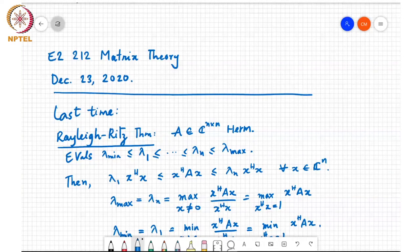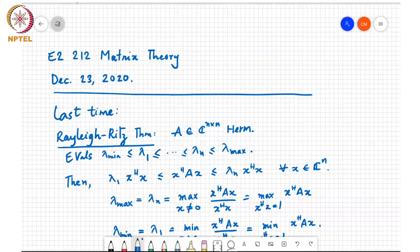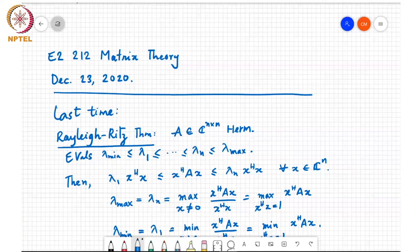We looked at the Rayleigh-Ritz theorem, which says that if you have a Hermitian symmetric matrix A, then if you order the eigenvalues, so the Hermitian symmetric matrix has all real valued eigenvalues. So you can order them in increasing order.